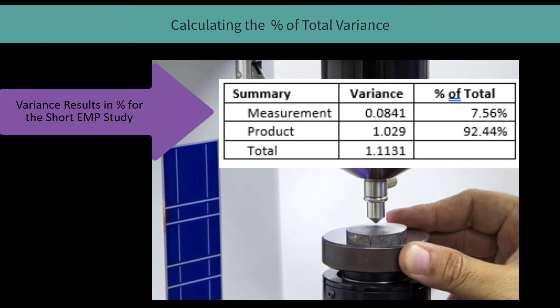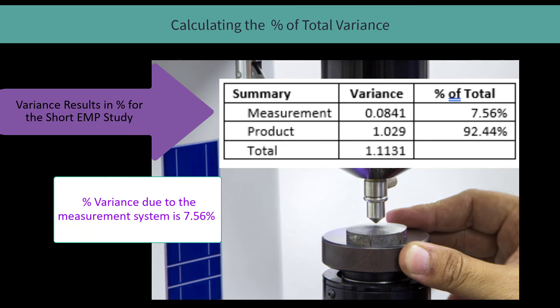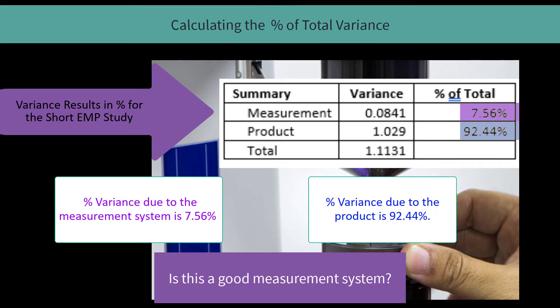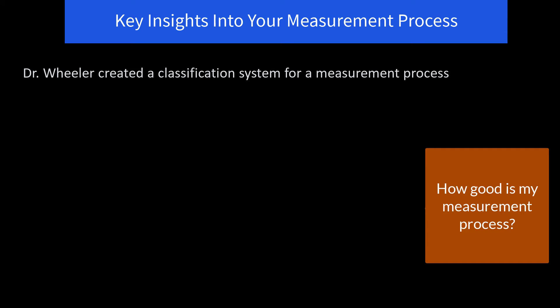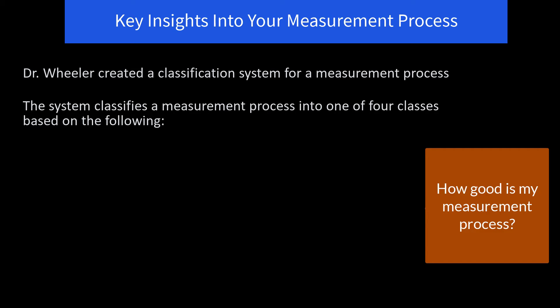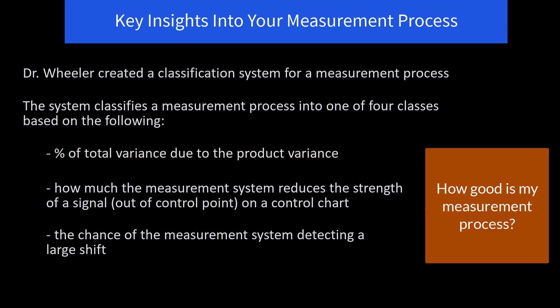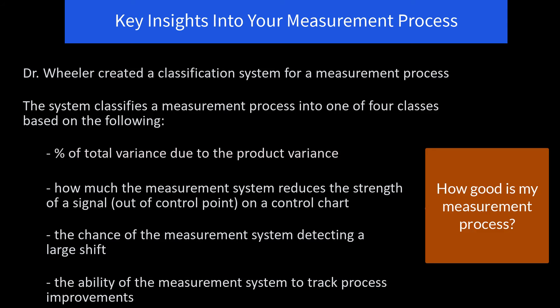Using these numbers, we calculate our percentages. The measurement variance divided by the total variance gives the percent of variance due to the measurement system — that's 7.56%. Repeating for the product gives 92.4%. But the question is: is this a good measurement system? Dr. Wheeler answers that question through the classification system he put together for measurement processes.